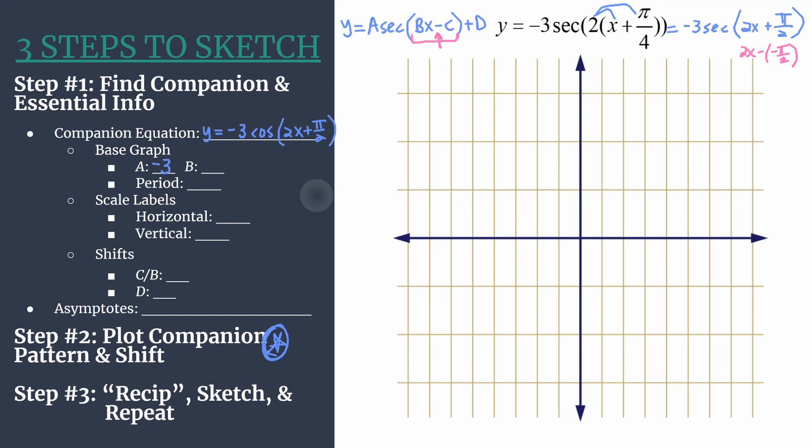Our b term we've already talked about, it's 2. A couple pieces of information that gives us. First, it tells us how many cycles of our graph should happen between 0 and 2 pi, so we should have 2. And we also use it to find the period or length of a horizontal cycle, and we do that using the formula 2 pi over b. So 2 pi divided by 2, our period is pi.